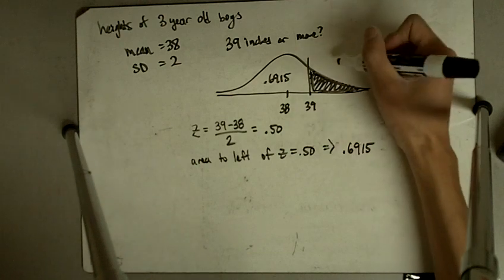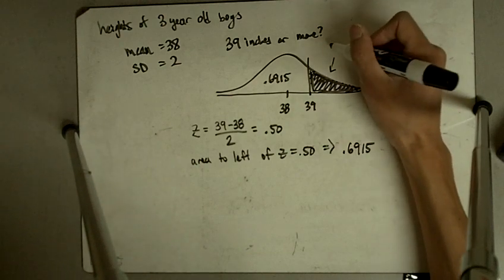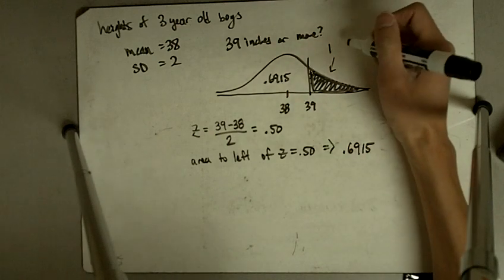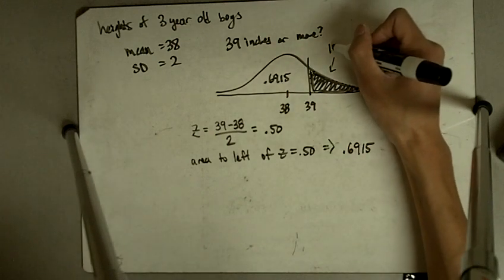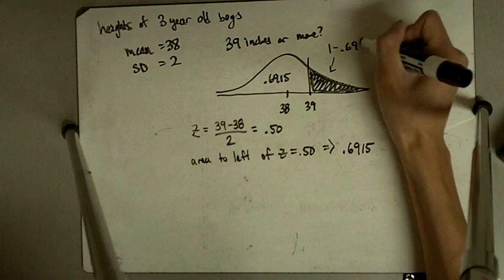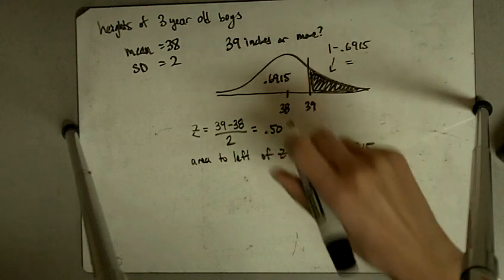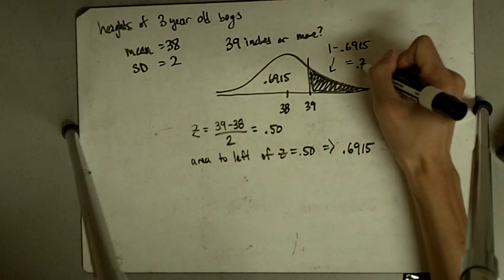And that's going to be, because the whole area under the curve adds up to 1, the area that's left over is going to be 1 minus 0.6915, and so that will be 0.3085.